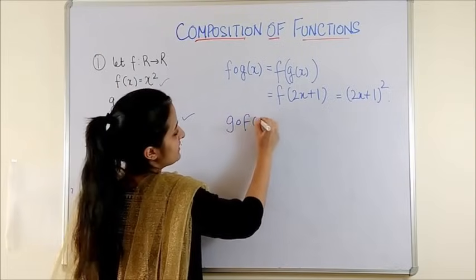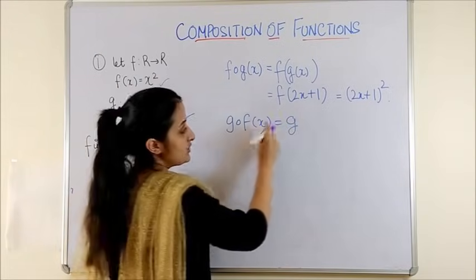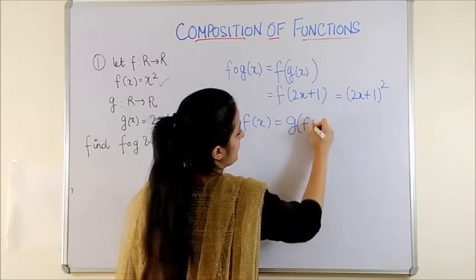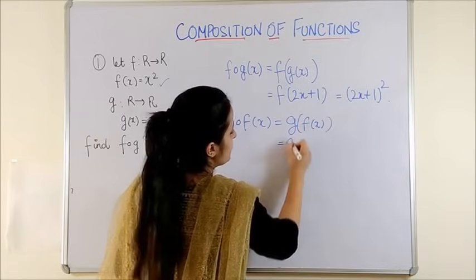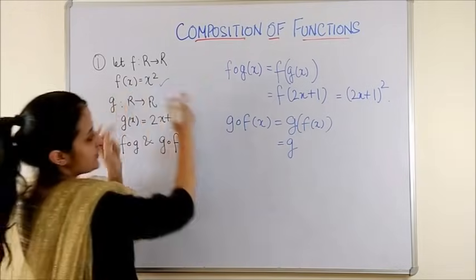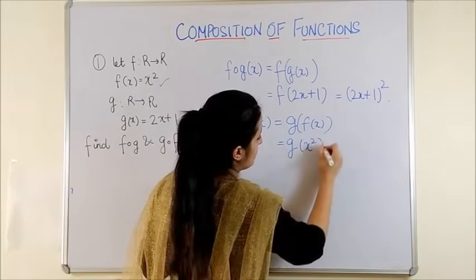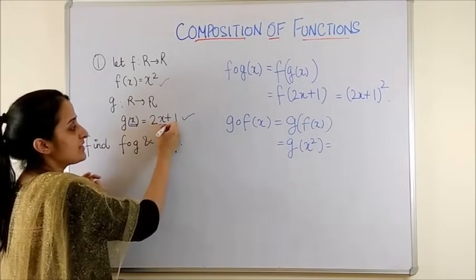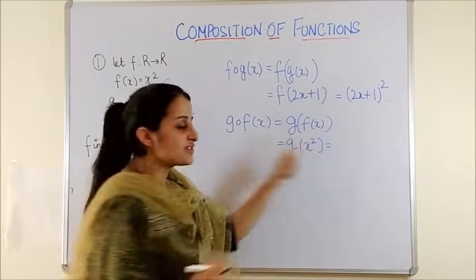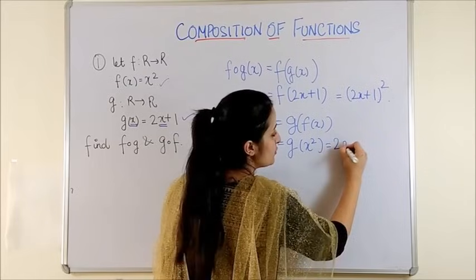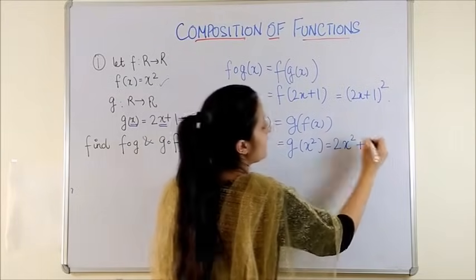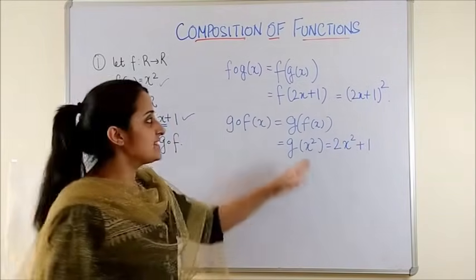Similarly, talking of G of Fx, we would be applying G to Fx. So this gives us G of x square. If G of x is 2x plus 1, then G of x square automatically becomes 2x square plus 1.